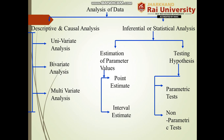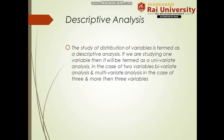Under statistical analysis we have two branches: estimating parameter values and testing hypothesis. Under estimation we have two types — point estimate and interval estimate. Under testing hypothesis we have two types — parametric test and non-parametric test.